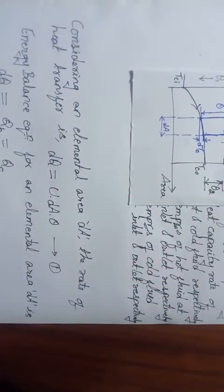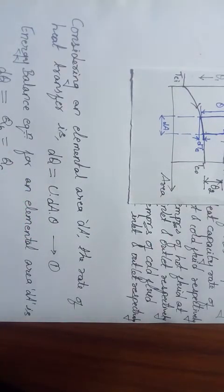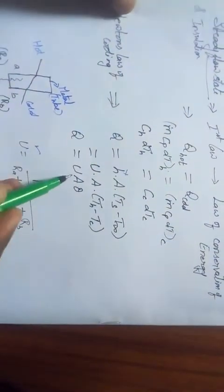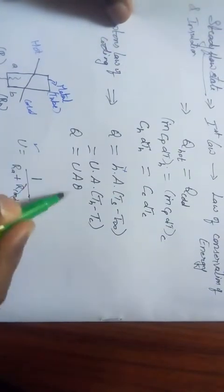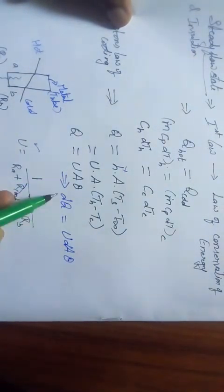We will proceed with the derivation. Considering a small elemental area dA, the rate of heat transfer is written as dq = U·dA·θ. This expression was explained in class 4, where for the entire area A the heat transfer is Q, so for the elemental area dA the heat transfer is dq = U·dA·θ. This is equation number 1.